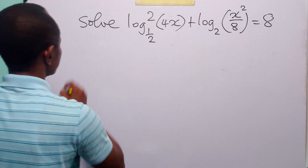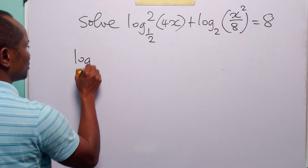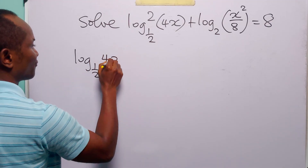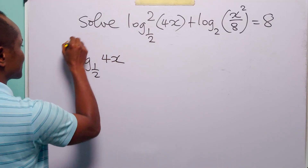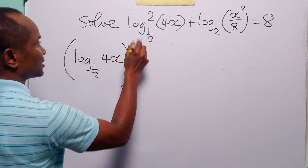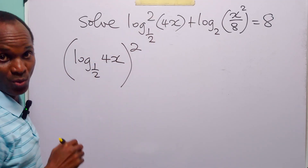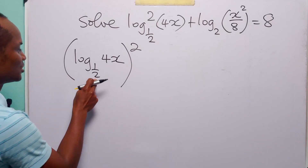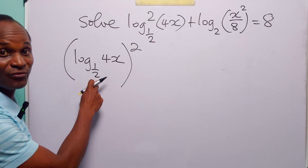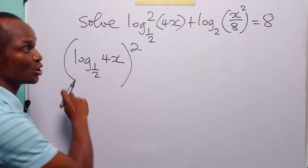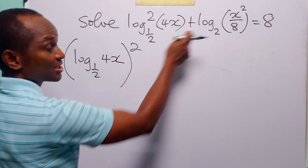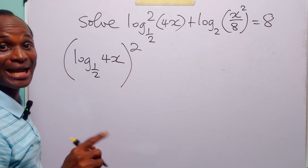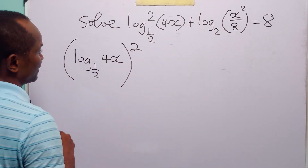This is the same as log to base one-half of 4x, all squared. The next thing we are going to do is change this from base one-half to base 2 to match this term. To do that, we are going to apply our change of base formula.